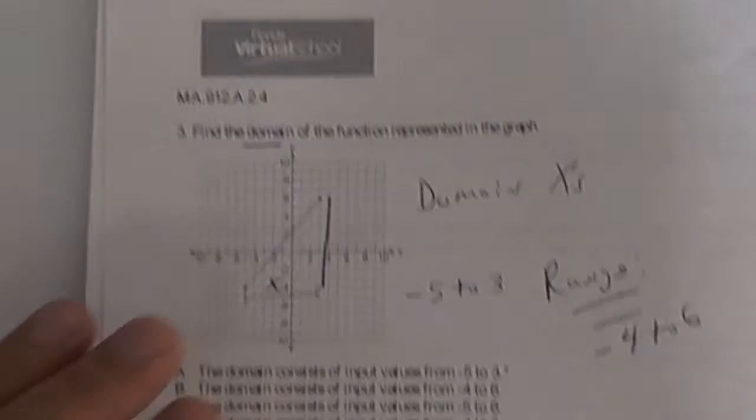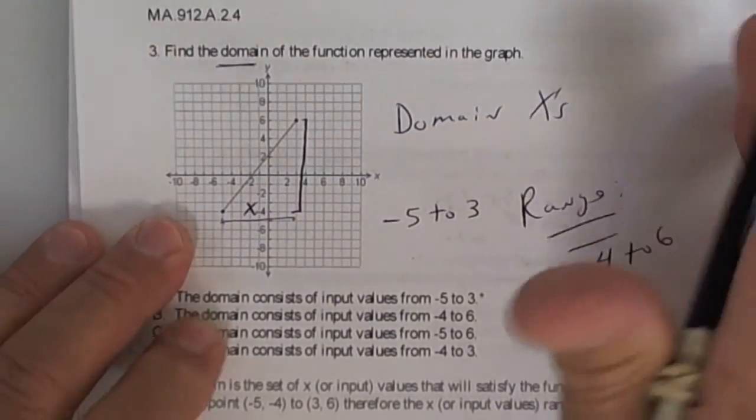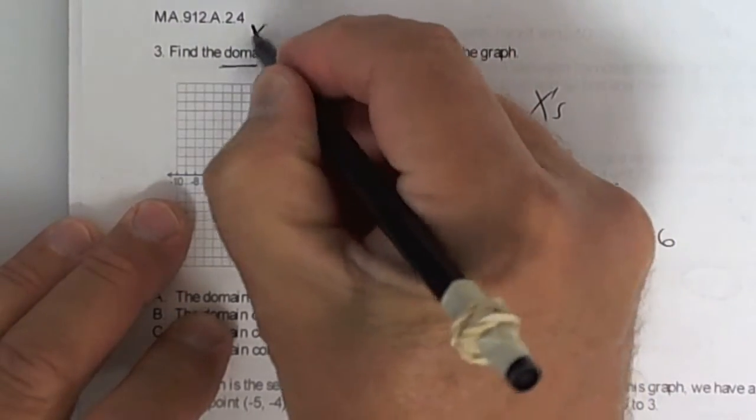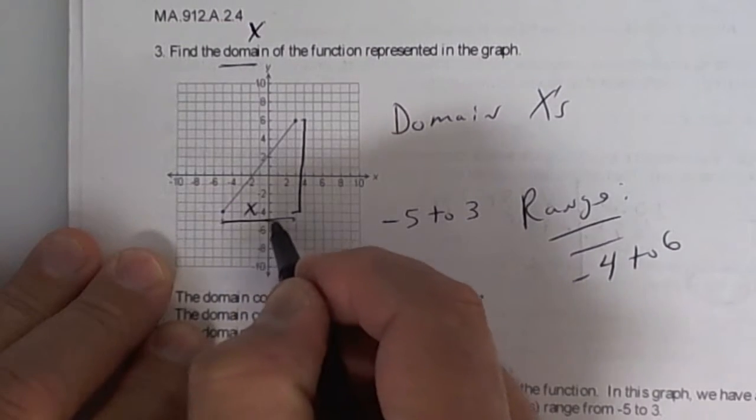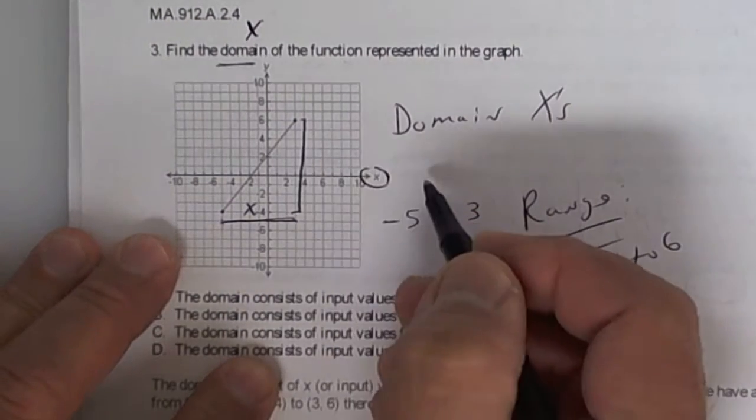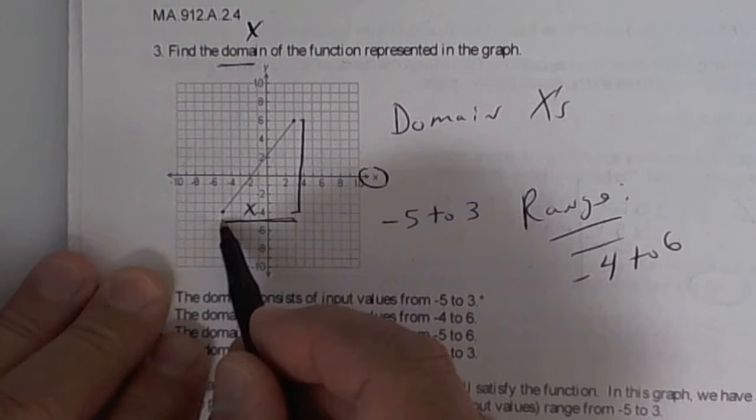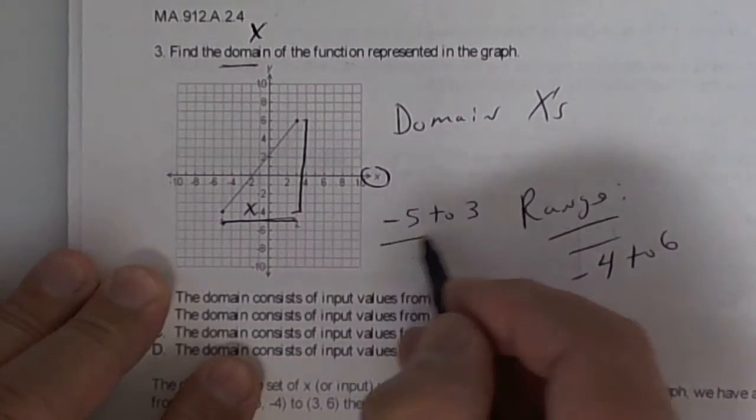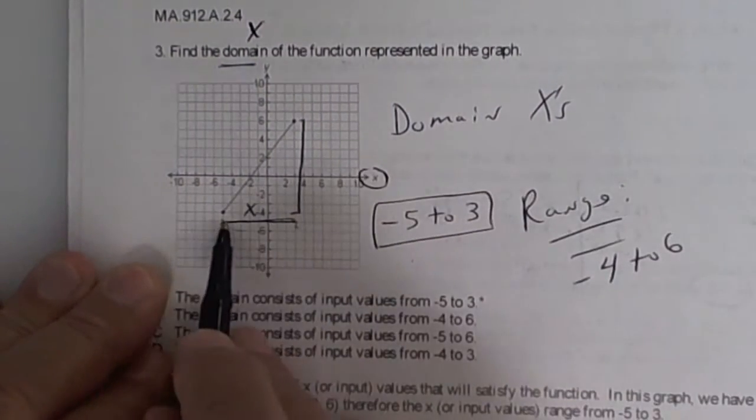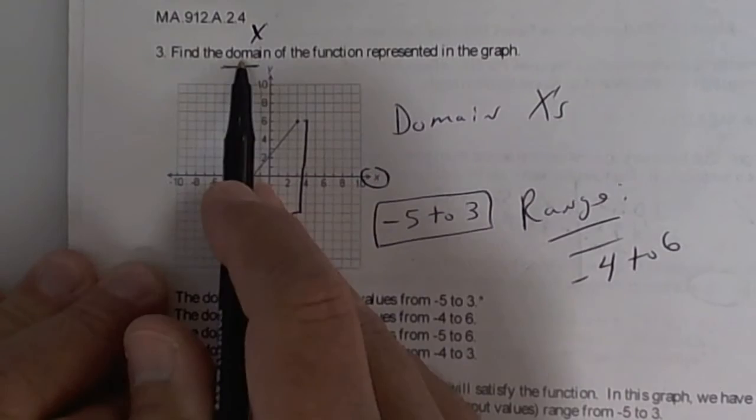This one right here says what is the domain. The domain is the x value. So all you do is look from here to here. The x value goes sideways. So it looks like it's from a negative 5 all the way up to a positive 3. So negative 5 to positive 3, that's your x value or your domain.